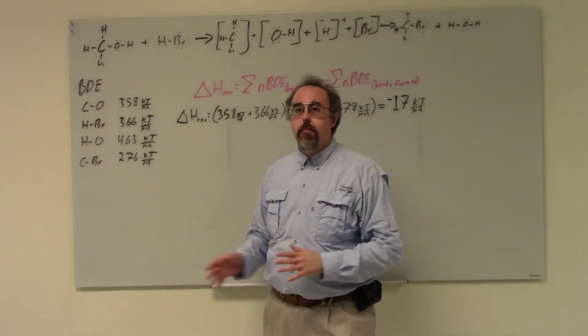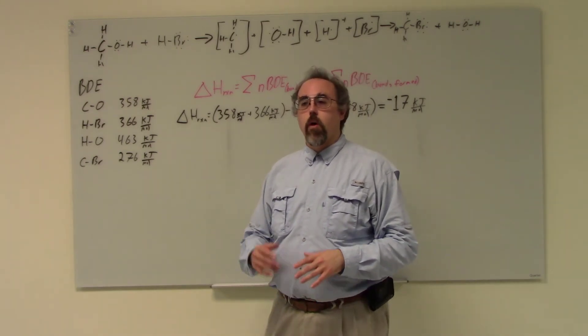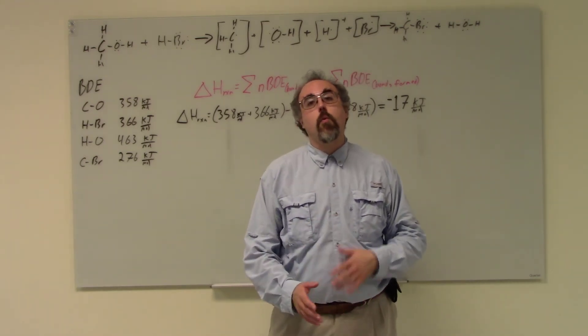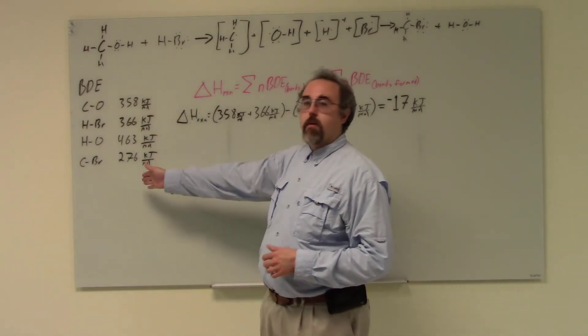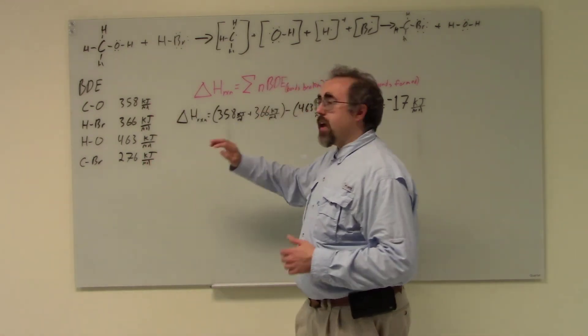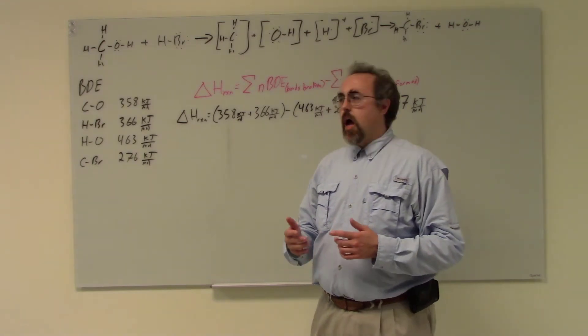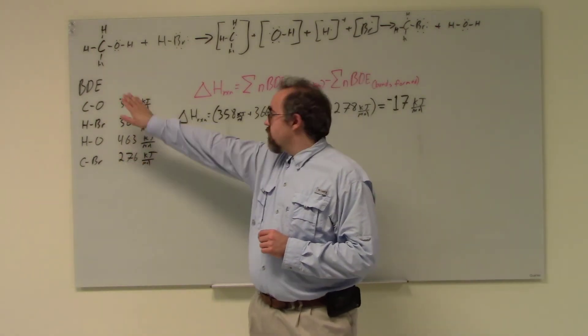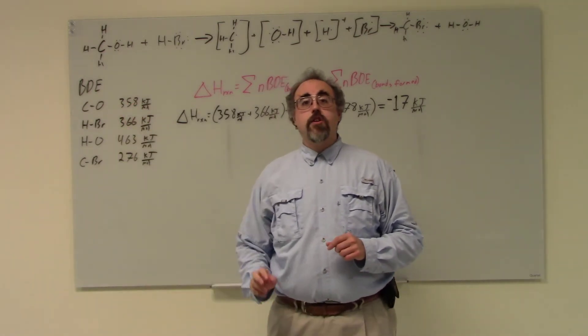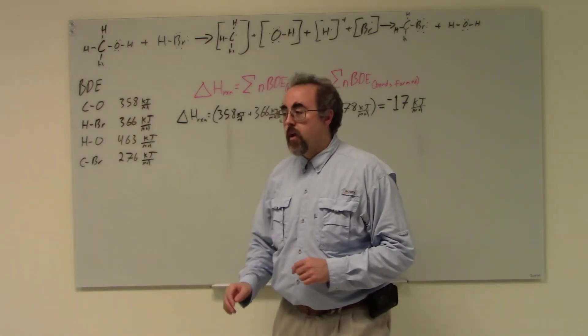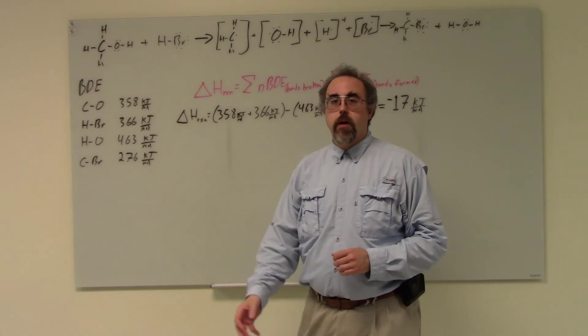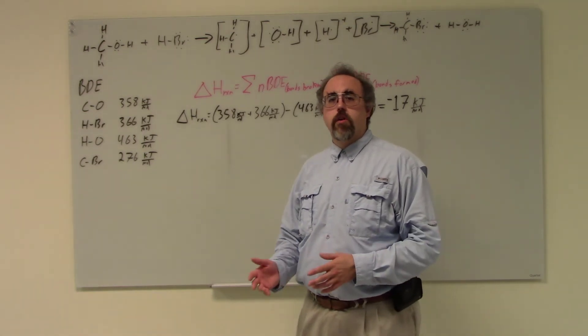So what I'm going to do is I need to look up bond dissociation enthalpies for all the bonds that are either broken or formed. And yep, there they are. And then I'm going to do a simple summation. Very similar to the heats of formation, but a little bit different. By the way, bond dissociation enthalpies, notice how these are all positive. That's the energy it's going to take to break them. You always take energy to break a bond.